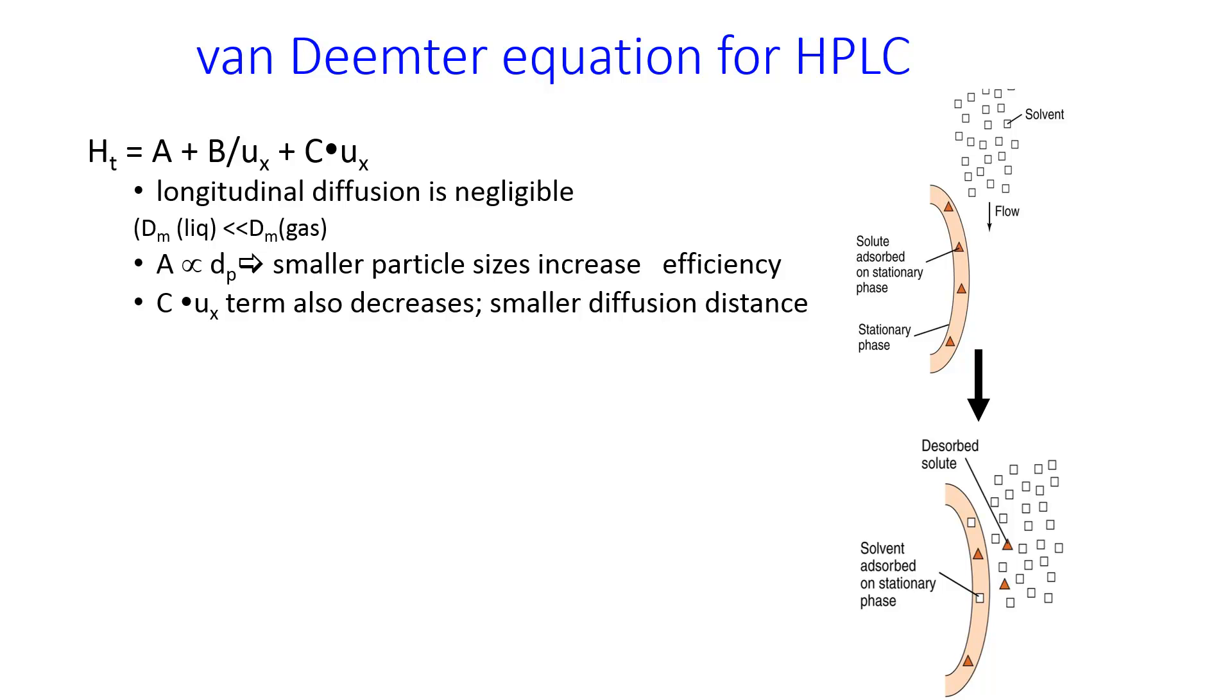Because of the smaller diffusion distance, this C term also is smaller. So the diffusion distance comes in because when you have smaller particles, there's more stationary phase surface area, and so it's easier for the solute to adsorb to the column. It doesn't have to look for a place to go. It just runs into some stationary phase which has a high surface area, and so it can adsorb.